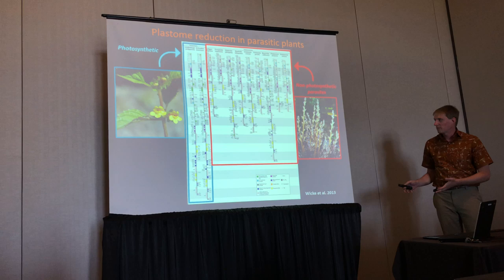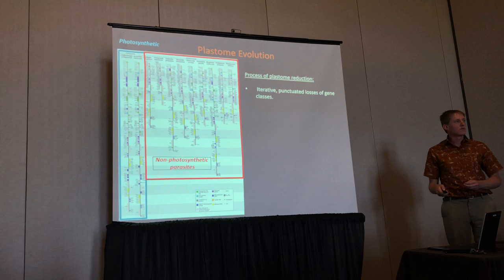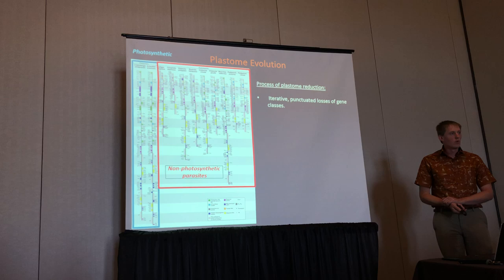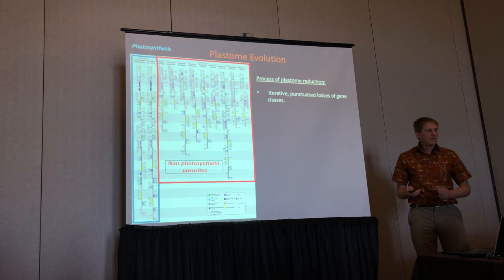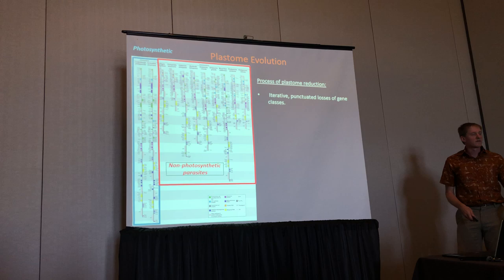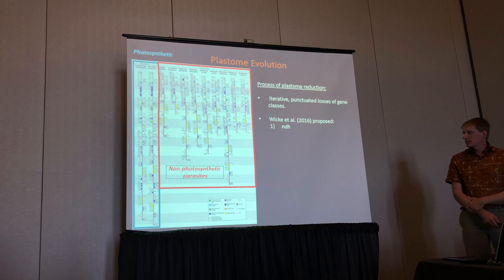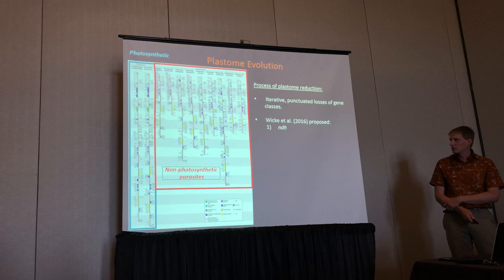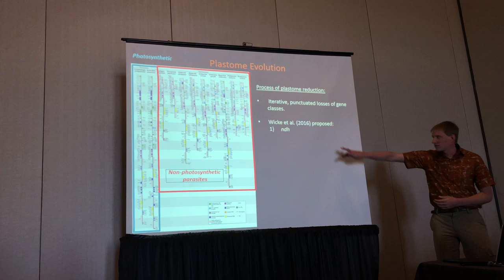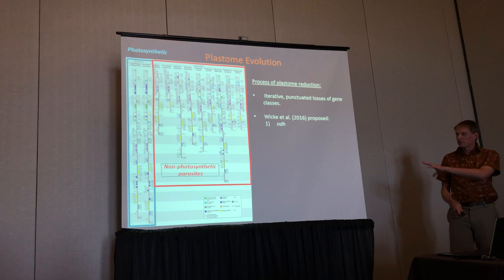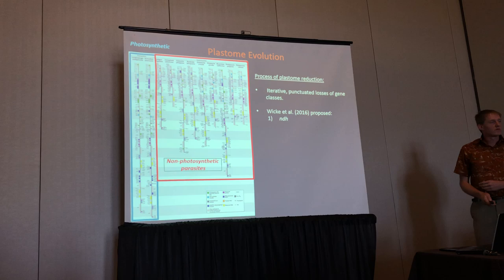That's maybe an interesting pattern, but what about the process? From that, people have been interested in trying to make more formalized models of plastome evolution — or we can think of it as degradation — once there's this relaxation of selection on photosynthesis. There are a number of different flavors of these models. The idea is that you have iterative, punctuated losses of different gene classes. In a follow-up paper, Wicke et al. proposed that the first genes lost are NDH genes, which are not directly involved in photosynthesis and code for NADH dehydrogenase enzymes. These genes are lost relatively frequently in different lineages — bromeliads, carnivorous plants, cacti — so it's not something you only see in parasitic plants, but it's often the first class of genes lost.